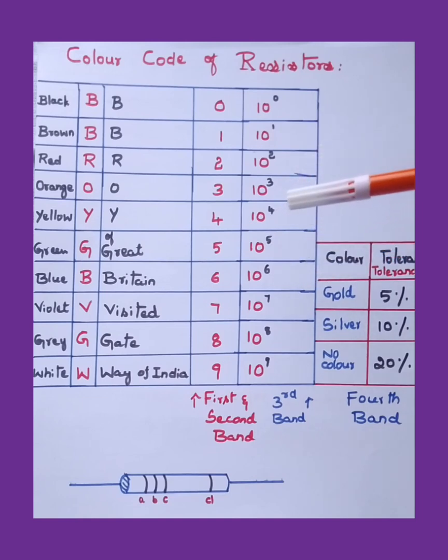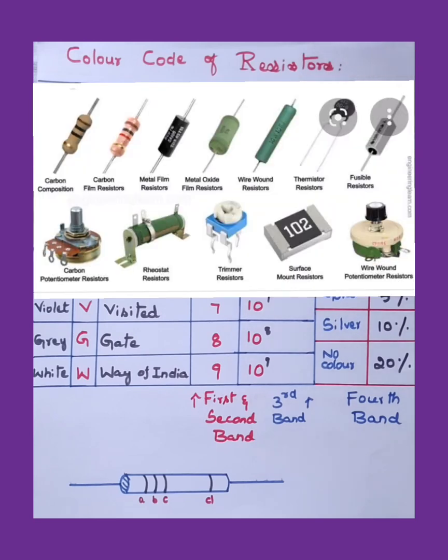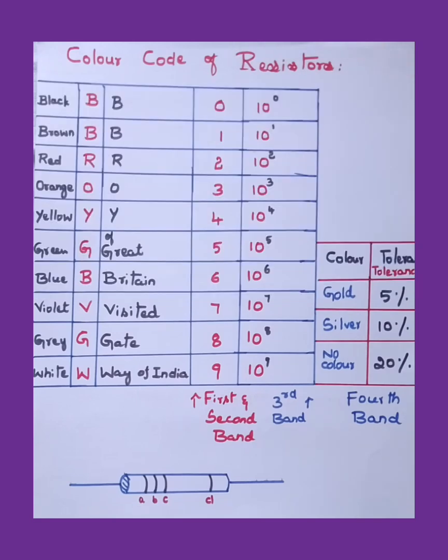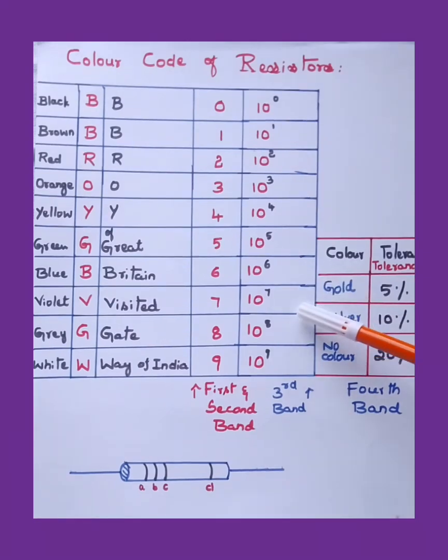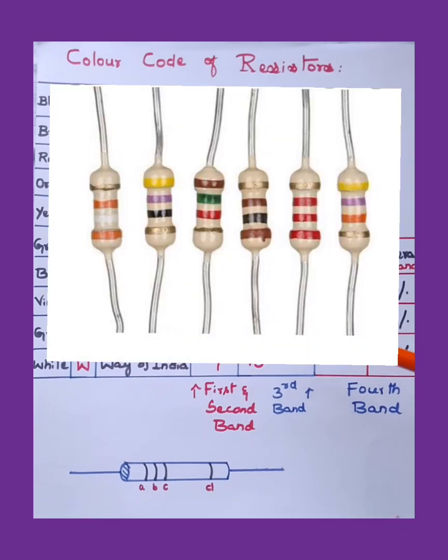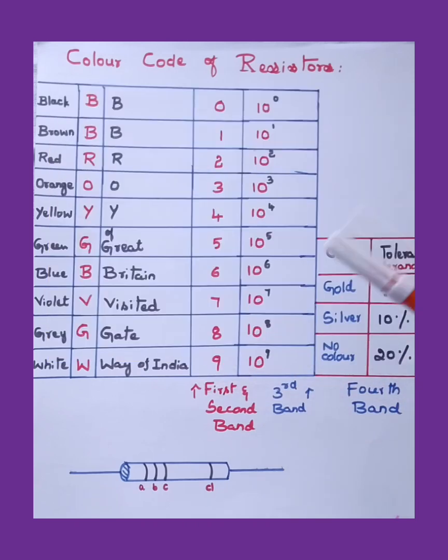Resistors are used in electrical and electronic circuits to limit the strength of the current. Resistors are available in different types: carbon composition resistors, metal film resistor, or wire wound resistors. The most commonly used resistors are carbon composition resistors. These resistors are available in certain standard values.